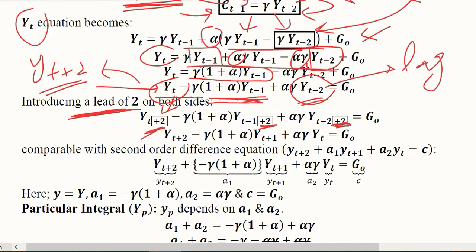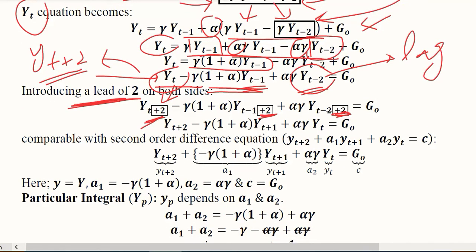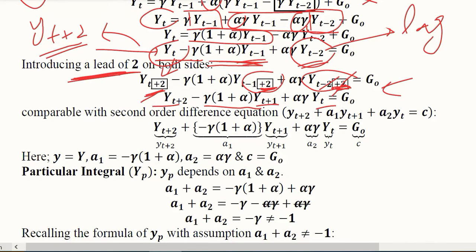When I did this introduction of 2 in all these subscripts, further simplification gave me this term. This became T plus 1 and this became T because minus 2 and plus 2 got cancelled out. Now when I look at this equation, it is now directly comparable with the standard form of the second order difference equation.